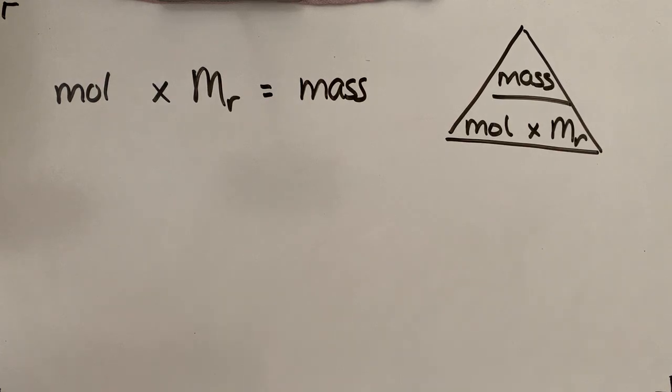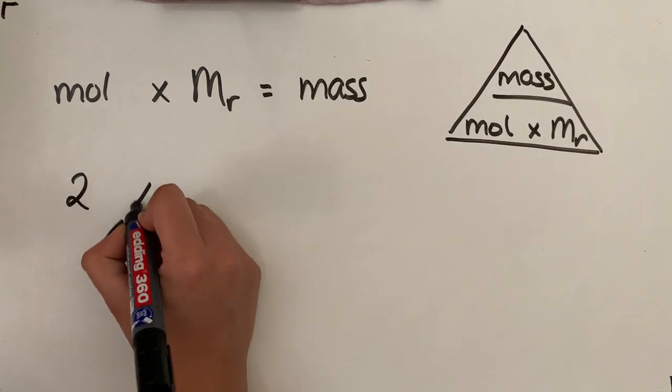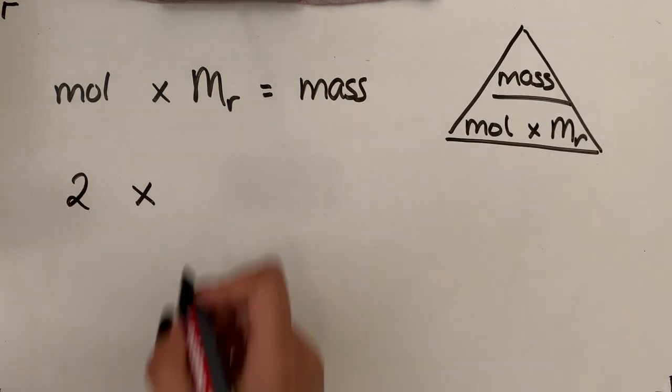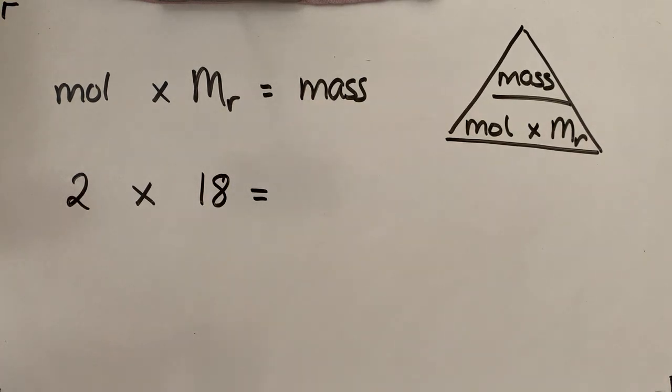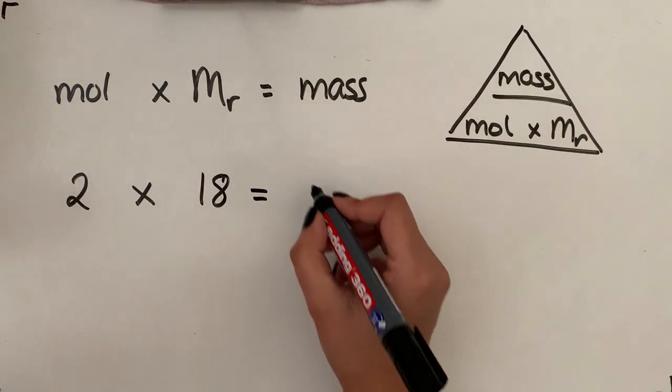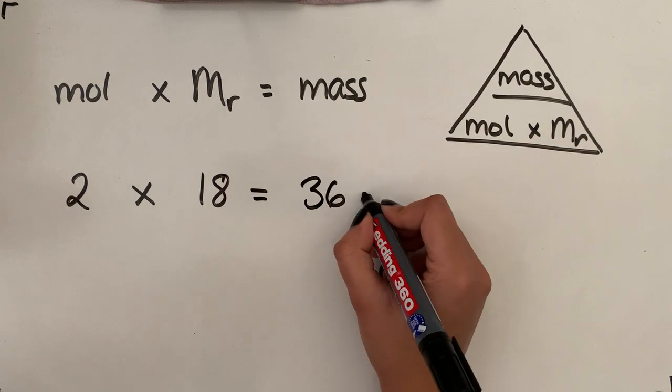So if we start off with question one, we've got two moles of H2O. So that's two times the molar mass of water, which we previously calculated as being 18. And that's going to give us our mass, which in this case is 36 grams.